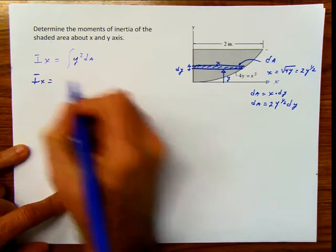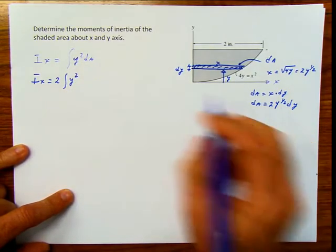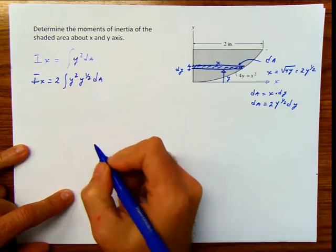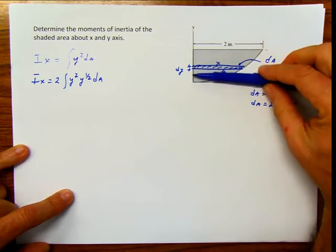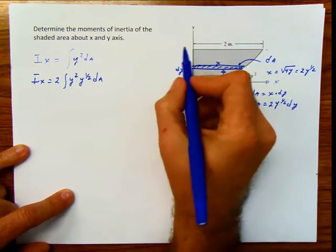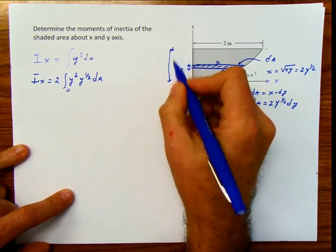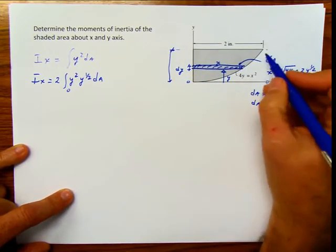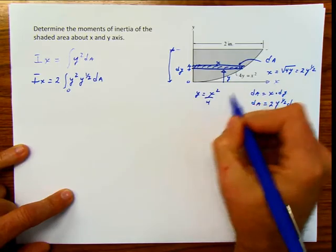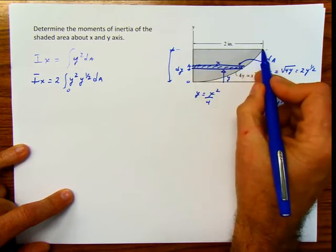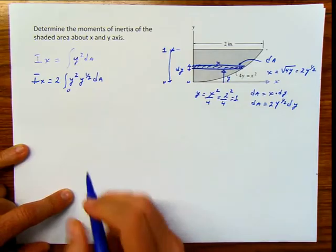I plug this into my equation and calculate I sub x equals 2 — from the differential of area — times y squared times y to the 1/2 dy. I have to cover all the shape with this differential of area, so I need to know my limits of integration. The first limit is 0. For the upper limit, using y = x²/4, if I plug in x = 2, that gives y = 4/4 = 1. So the limits are from 0 to 1.